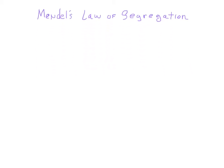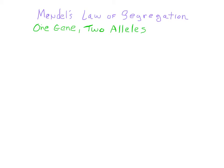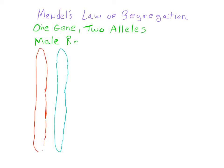In this video we're going to look at Mendel's law of segregation. For this model we'll look at a trait governed by one gene and two alleles. Let's say we have a male with the genotype big R, little r. This trait would naturally be hosted on a pair of homologous chromosomes — the red one is from the individual's father and the blue one is from the individual's mother. The dominant allele lies on the red chromosome while the other allele lies on the blue chromosome.